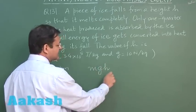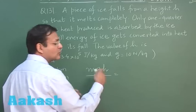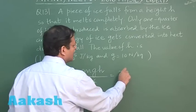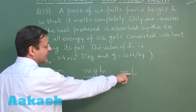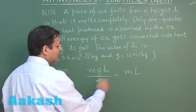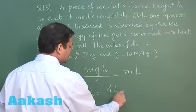One fourth of that is getting absorbed by the ice to completely melt itself. So m into L, and you are supposed to calculate the value of h. L is latent heat of ice, so this is 4L by g.